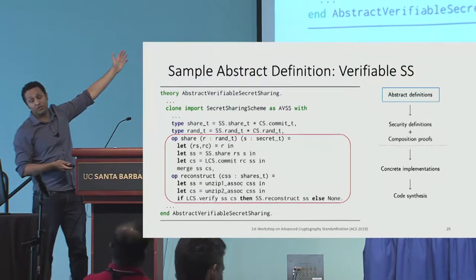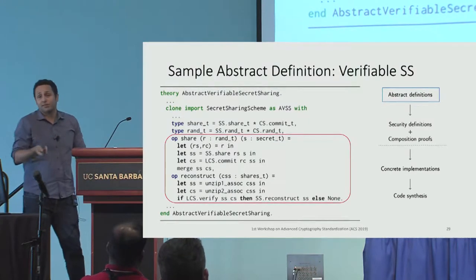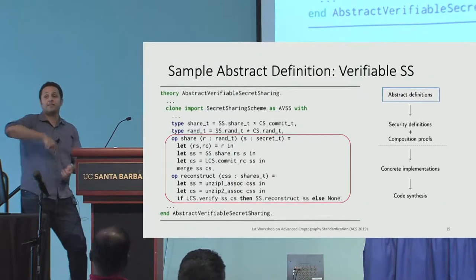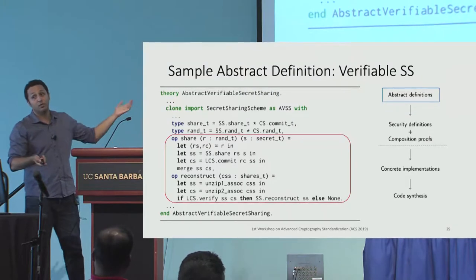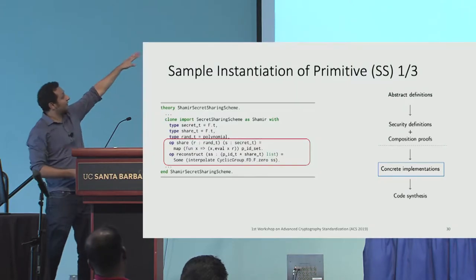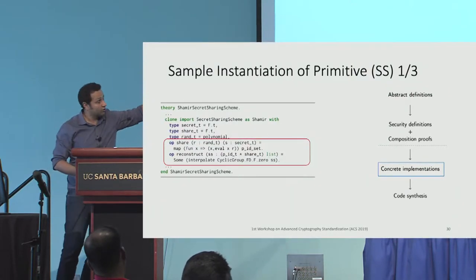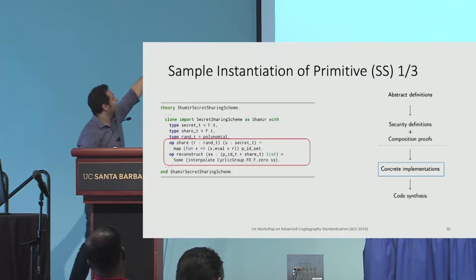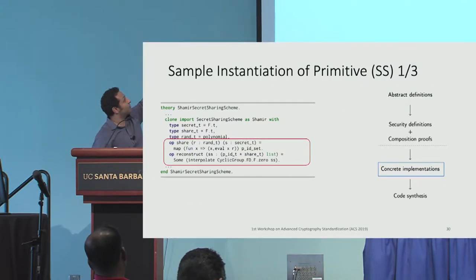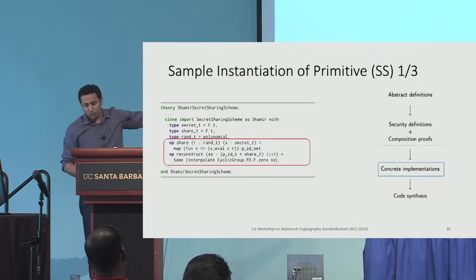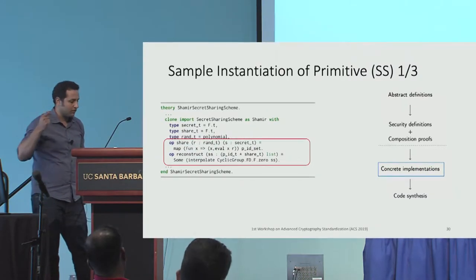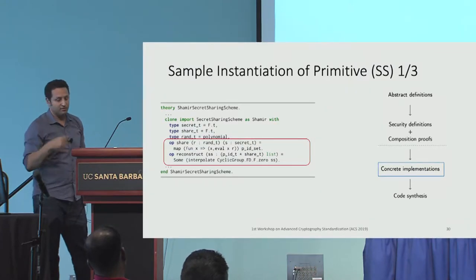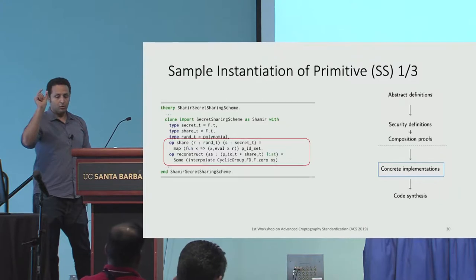We also did verifiable secret sharing — similar to how in object-oriented languages you inherit a class and overload some members. The share and reconstruct operations are more involved because it's verifiable. This is now the concrete implementation of secret sharing following Shamir. What this map says is: you take some randomness and a secret of type SecretT, and evaluate a polynomial using that secret as the free term. The randomness you pass is a random polynomial with zero free term, and you add to it the actual secret so it's in the free term, then share it.